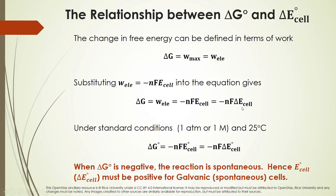This does not necessarily have to be at standard conditions. Under standard conditions, we add the naught symbol to each variable. That means concentration is one molar; if a gas is involved, pressure is one atmosphere; and temperature is usually 25 degrees C. Note that delta E°_cell and E°_cell mean the same thing depending on the textbook.